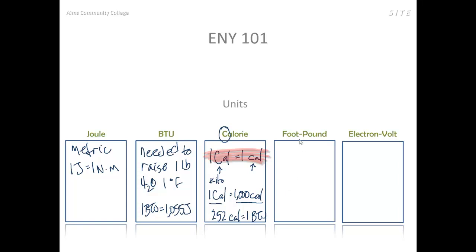The foot-pound is the US version of the joule or the Newton meter. Here we replace the Newton with the pound and the meter with the foot, and it turns out that one BTU equals 778 foot-pounds. In other words, we can lift a one-pound object 778 feet into the air.